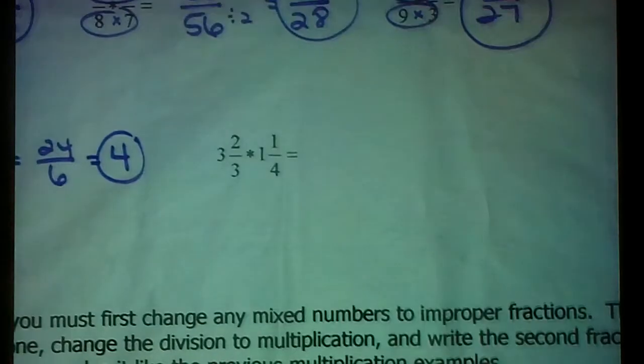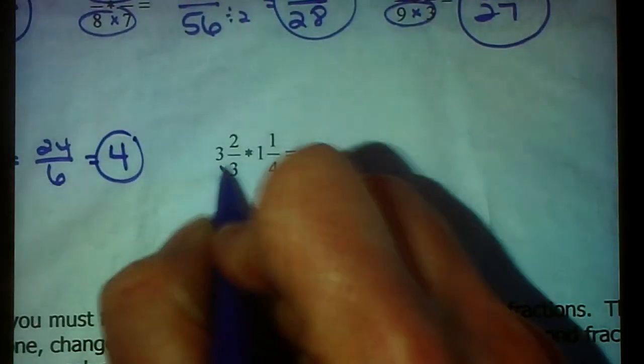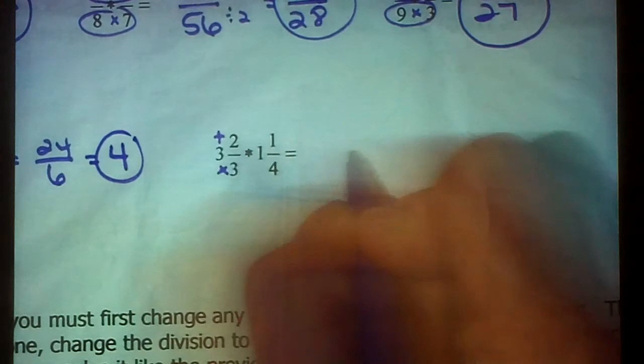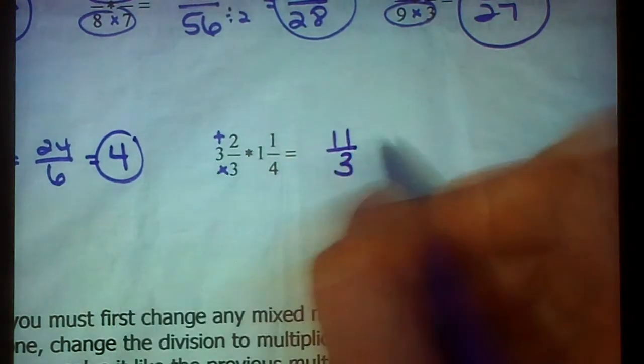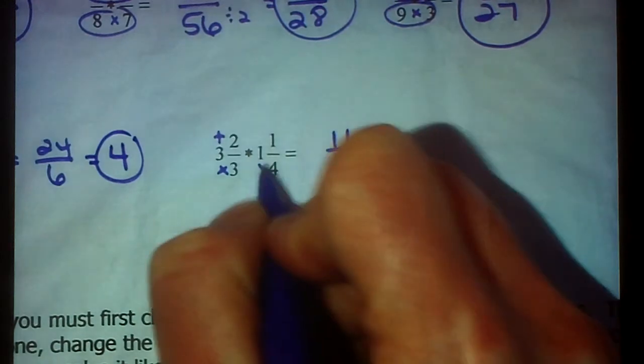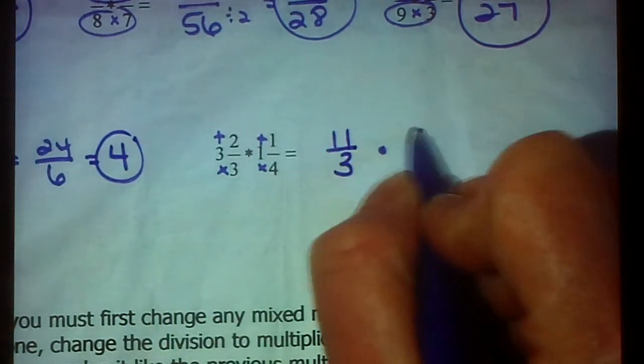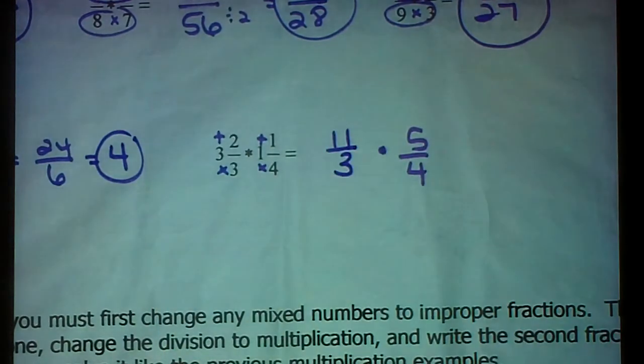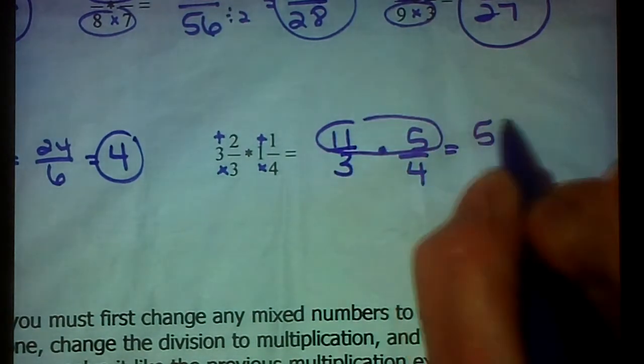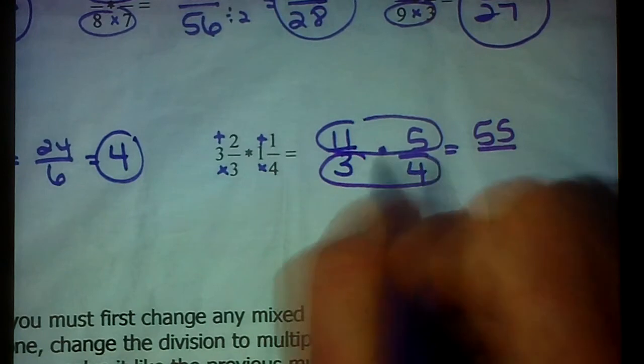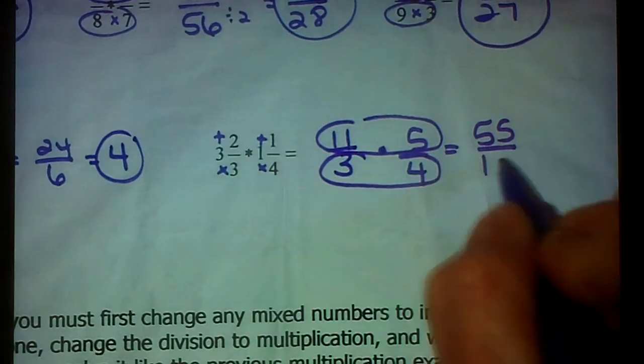Alright, last mixed number example. We're going to change this. Again, 3 times 3 is 9, plus 2 is 11, so this becomes 11 thirds, because you keep that denominator. Multiply that by, 4 times 1 is 4, plus 1 is 5, so that's now 5 fourths. When you multiply across the top, you get 55. When you multiply across the bottom, you get 12.